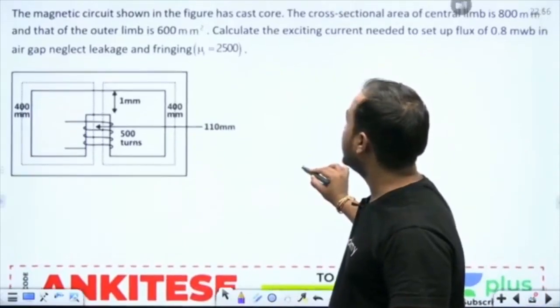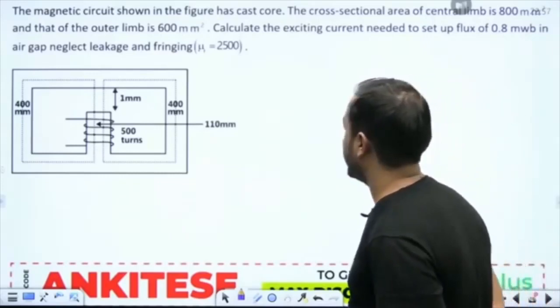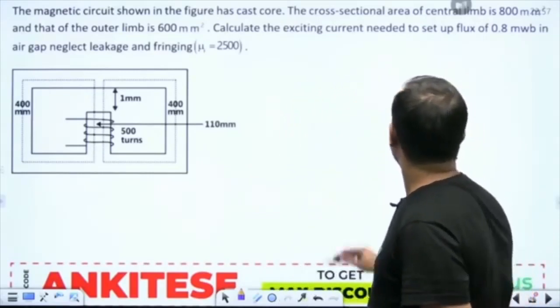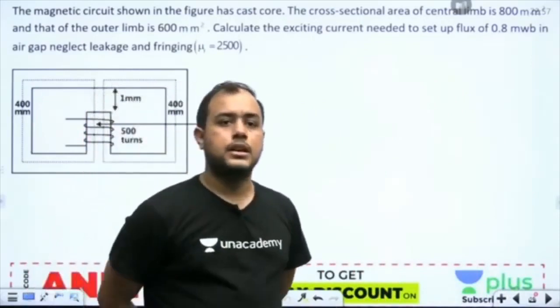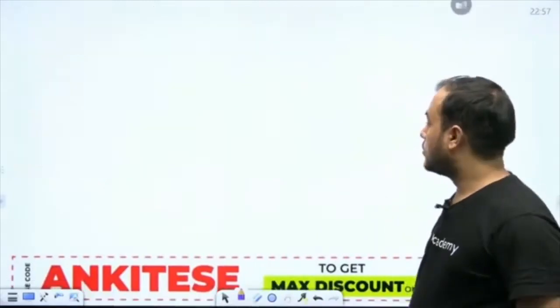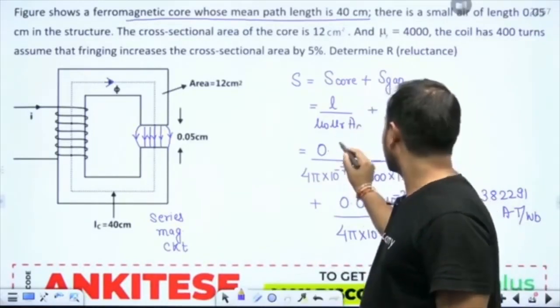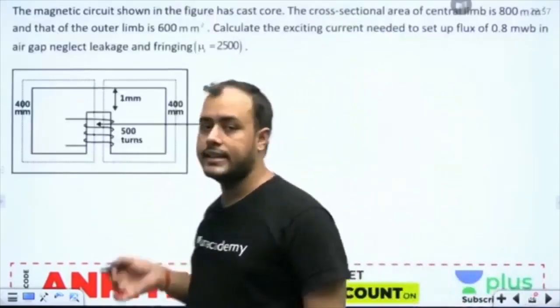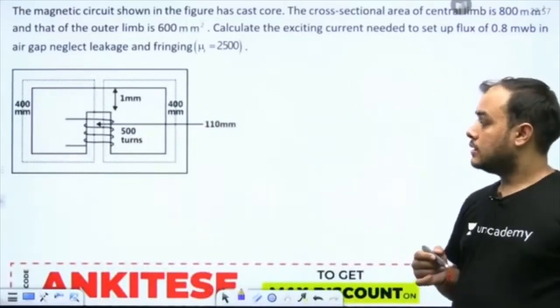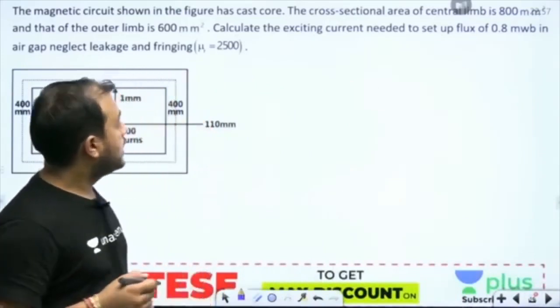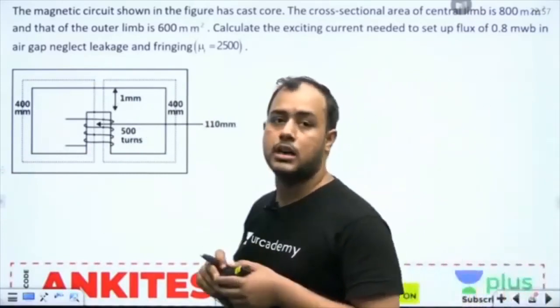It is saying the magnetic circuit shown in the figure has a cast core. The cross-section area of central limb is 800 mm square, outer limb 600 mm square. Calculate excitation current needed to set up 0.8 milliweber in the air gap.